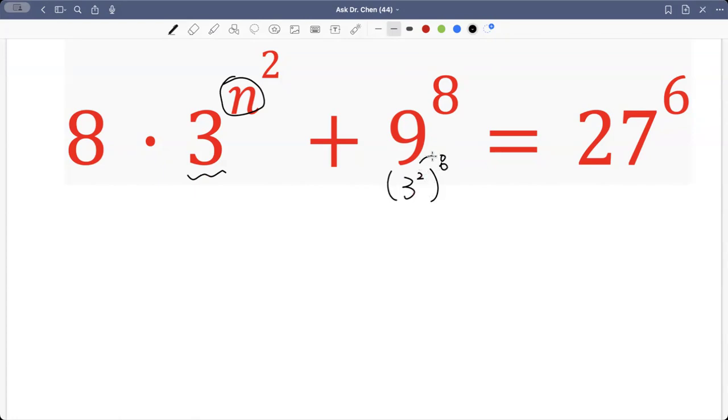Two layers of exponents, we multiply them. So we can rewrite this one as 3 raised by 16, 2 times 8 is 16.